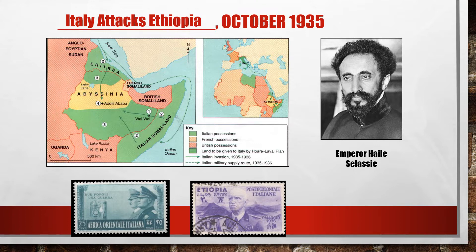The leader of Ethiopia, Haile Selassie — a very interesting guy — goes to the League of Nations, stands before them, gives a great eloquent speech basically saying: what are you going to do, how can you help us, this is why you exist. To which the League essentially says they can't do anything — oh wait, they did issue sanctions against Italy.